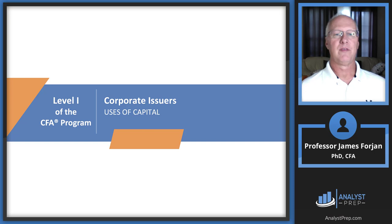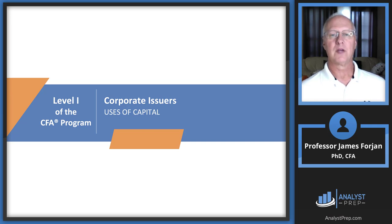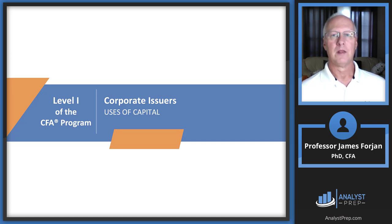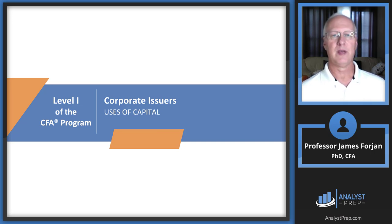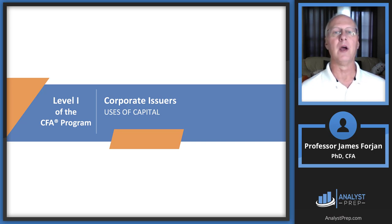This is level one of the CFA program, the topic on corporate issuers and the reading on uses of capital. This is actually a paired reading with the next one, which is called sources of capital. These are new readings which replace capital structure and capital budgeting, and the CFA Institute has taken a less academic and more practical approach to this topic area.